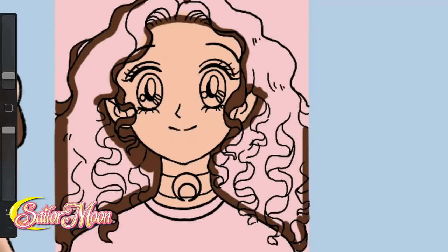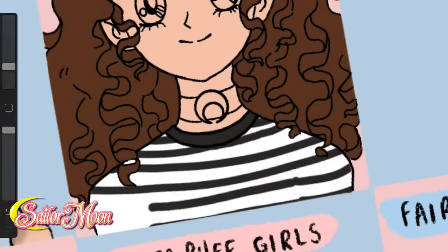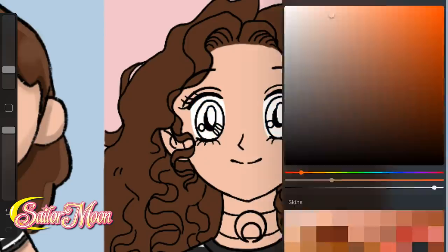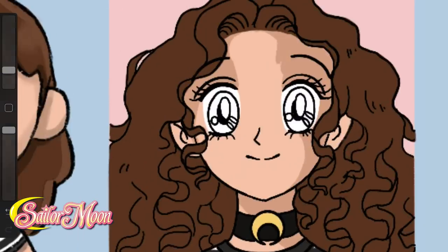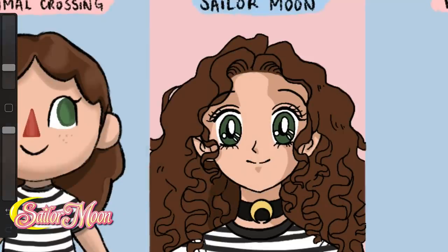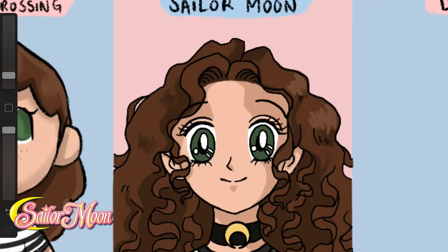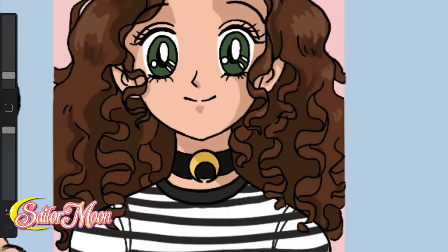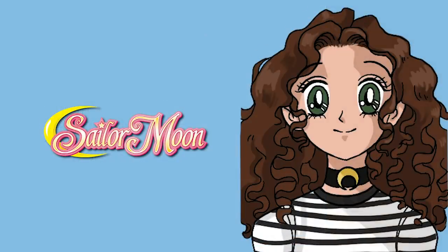Then I colored everything in. With anime it was very interesting to see how they shade things — it's not a seamless blend, it's more of a block color shading, which is something I'm not used to. Figuring out how the hair shadows play with the forehead was a lot of trial and error, but I think it ended up looking pretty cute — very kawaii. And that was the end result for me as Sailor Moon.